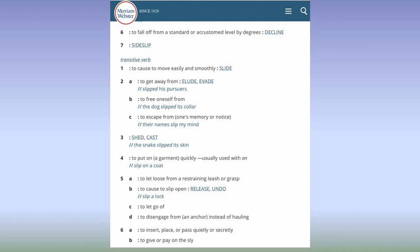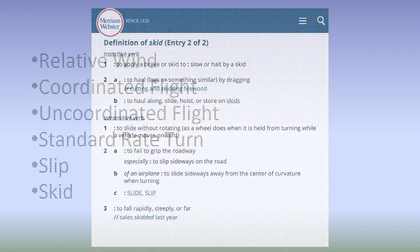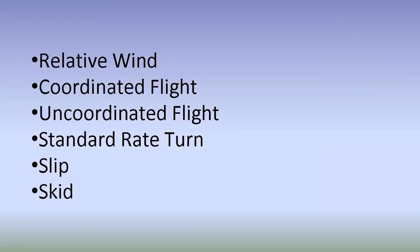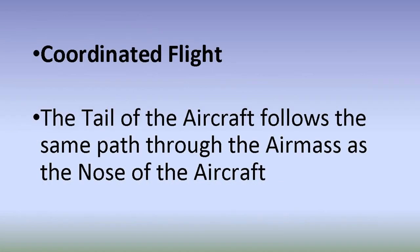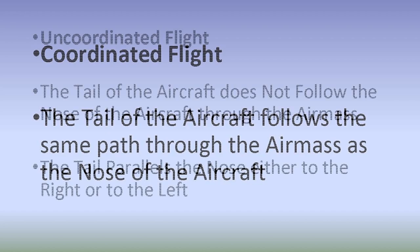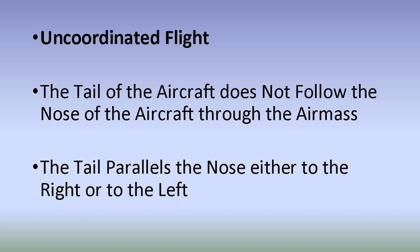We're going to define six terms: relative wind, coordinated flight, uncoordinated flight, standard rate turn, slip, and skid. The relative wind is the wind that creates lift — it's the movement of the airfoil, not the movement of the air mass, that generates lift. The relative wind is always opposite to the direction of movement of the airfoil. In coordinated flight, the tail of the aircraft follows the same path through the air mass as the nose. In uncoordinated flight, the tail does not follow the nose — it parallels it but is offset either to the right or to the left.